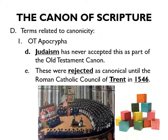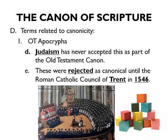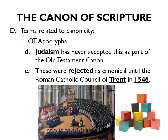These books were rejected as canonical until the Roman Catholic Council of Trent in 1546. For over a thousand years they were not accepted as scripture. While the Council of Carthage appeared to have approved these books, commentaries by Jerome and many others show they were only allowed to be read for ecclesiastical purposes and not as inspired. They were used for helpful literature, but not as our rule of life.